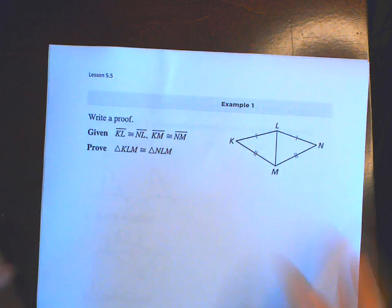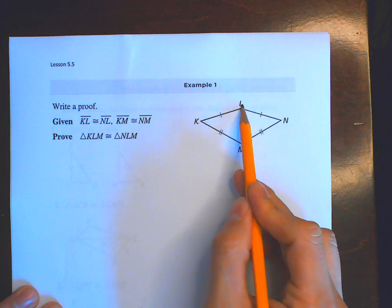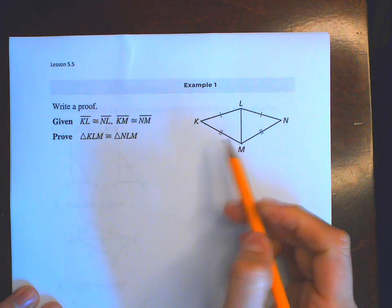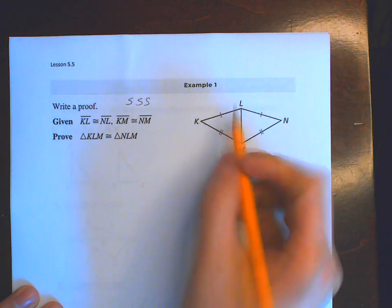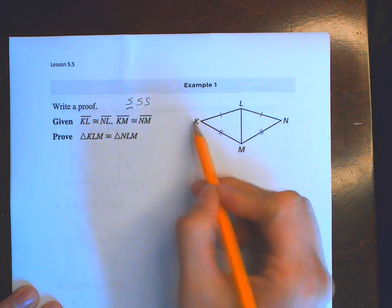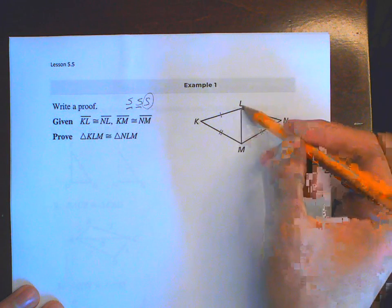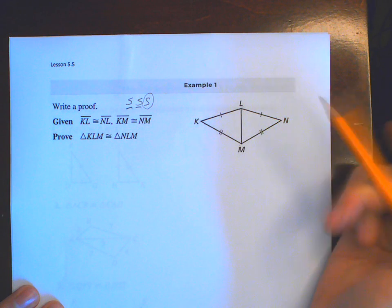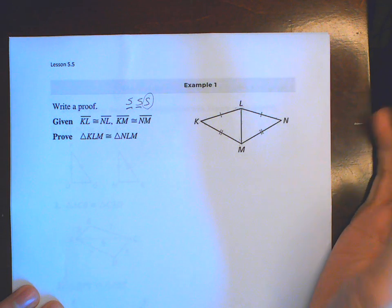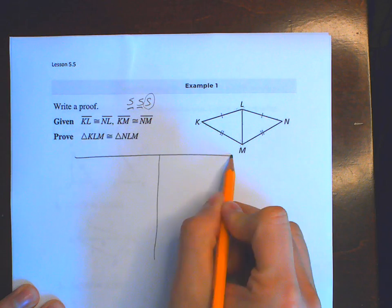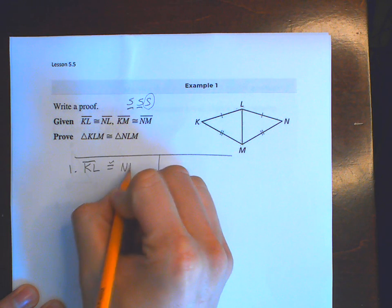Let's begin our first example — it's a proof, and it's an easy one. You're given that KL ≅ NL and KM ≅ NM, and you need to prove the triangles are congruent using the side side side theorem. We only have two sides given, so we need a third. Looking at the figure, LM is a common shared side, so LM ≅ LM.